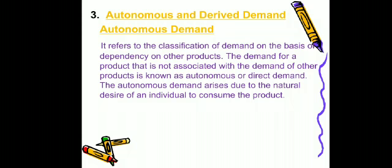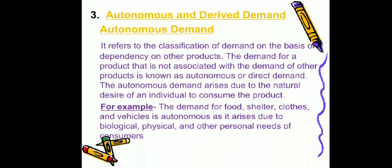The autonomous demand arises due to the natural desire of an individual to consume the product. Autonomous demand occurs because of an individual's natural desire to consume that product. Here we can understand through an example: the demand for food, shelter, clothes, and vehicles is autonomous, because these depend on an individual's personal needs, biological needs, and physical needs.